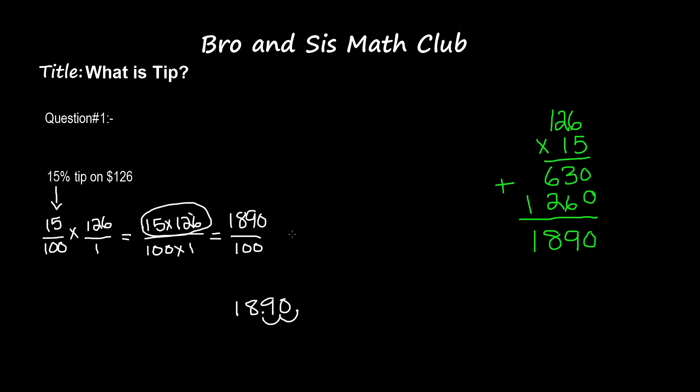And now our new number becomes 18.90, and this is $18.90. So the 15% tip on $126 is $18.90. But wait, we're not done here. We still need to find out how much total we still have to pay.